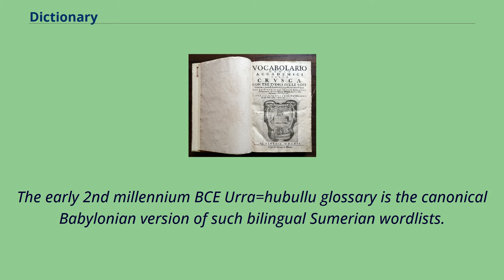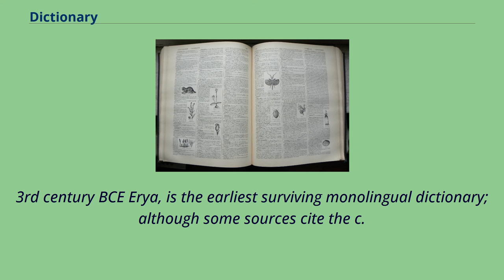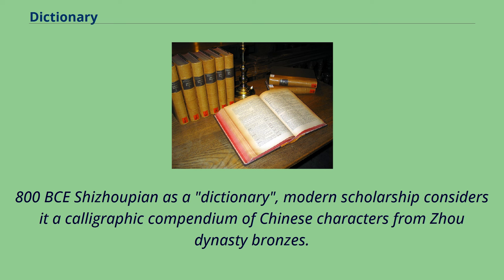The early 2nd millennium BCE era Halulu glossary is the canonical Babylonian version of such bilingual Sumerian wordlists. A Chinese dictionary from the 3rd-century BCE era is the earliest surviving monolingual dictionary, although some sources cite the 800 BCE Erya. Modern scholarship considers it a calligraphic compendium of Chinese characters from Zhou dynasty bronzes.